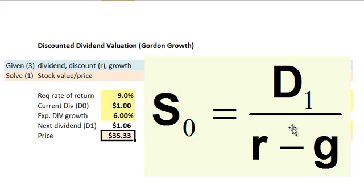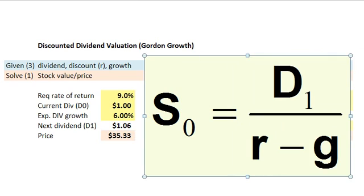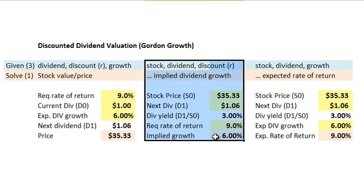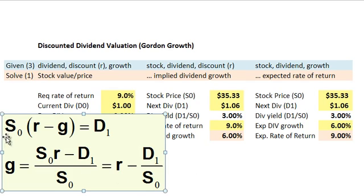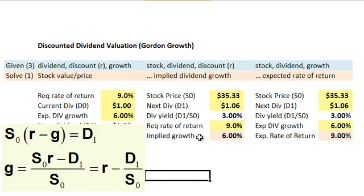Because we have a function in four variables, we can solve for any one of the four as a function of the other three. Next, I want to show the idea of solving for the implied dividend growth. Taking the same Gordon Growth Model and multiplying both sides by R minus G, then solving for G, the growth rate reduces to R minus what I'll call the dividend yield — D1 divided by the stock price. So if I observe a stock price in the market, along with a dividend and a discount rate, I can use Gordon Growth to solve for the implied dividend growth.